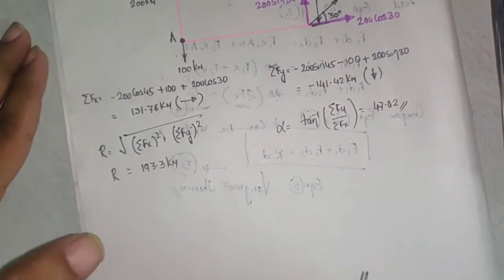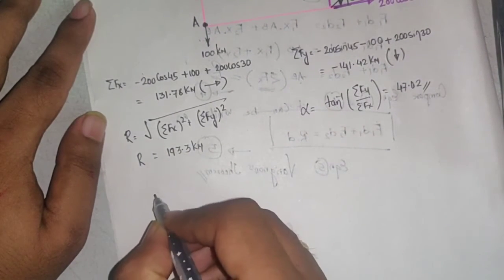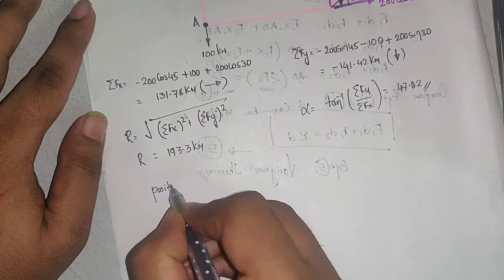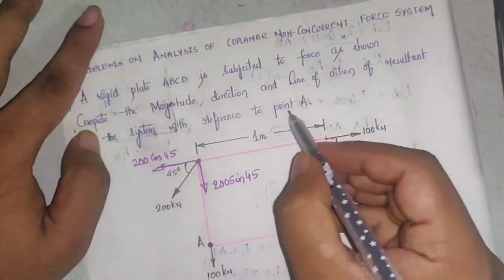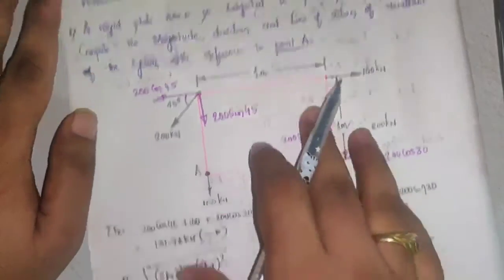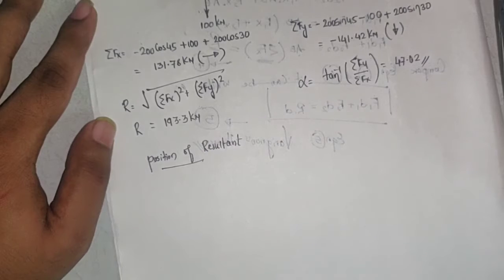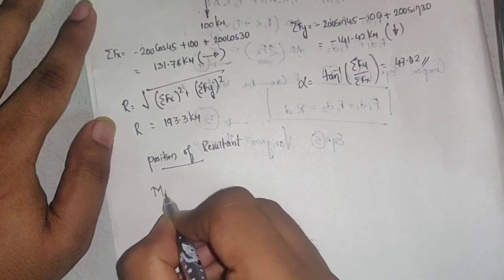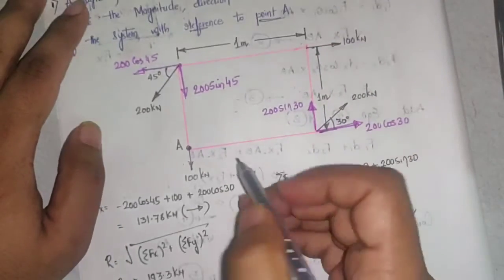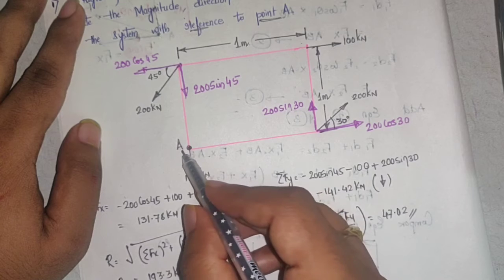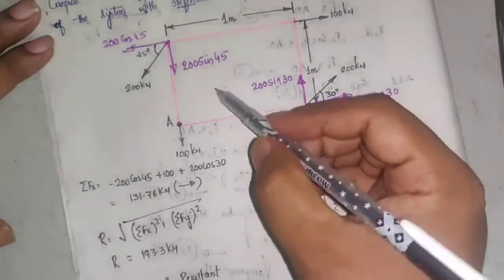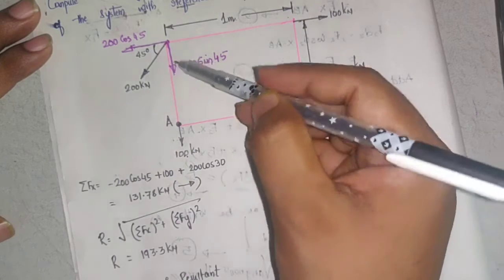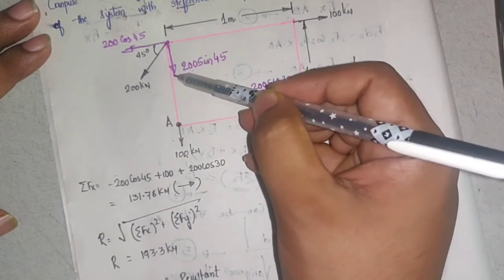Up to this point it is similar to problems on coplanar concurrent force systems. From here onwards it changes. To find the position of the resultant — the additional part required — we find the moment about point A. For 100 kN: its line of action passes through A, so no perpendicular distance, moment is zero. For 200 sin 45: also in line with A, so this is also zero.